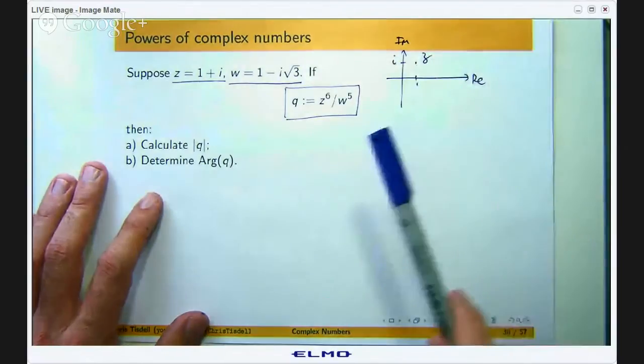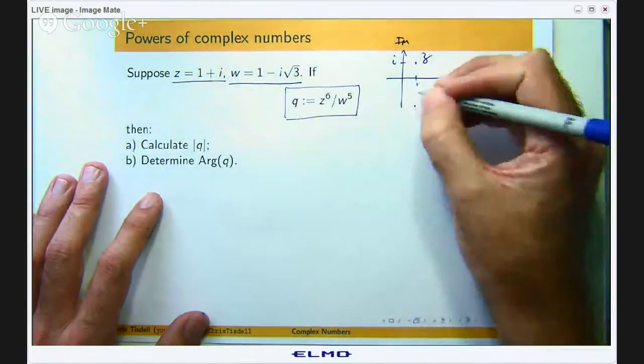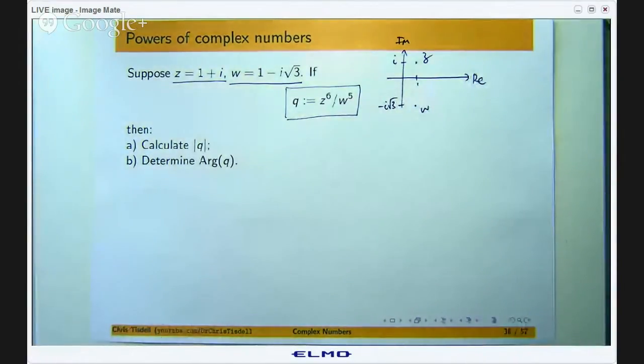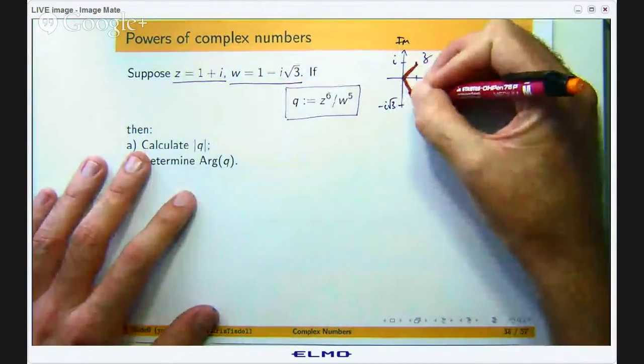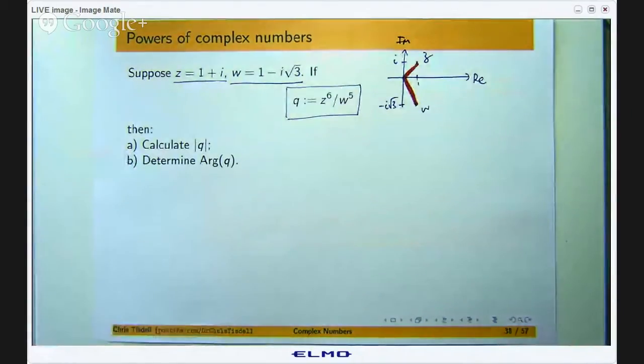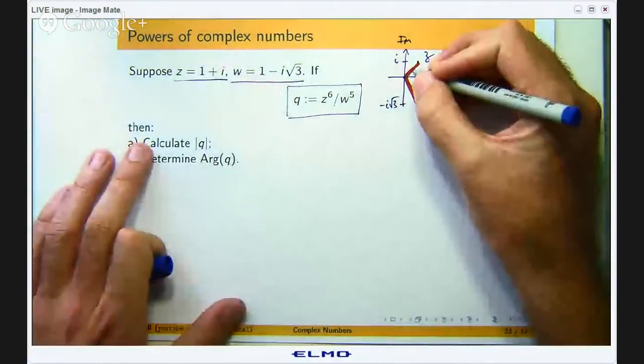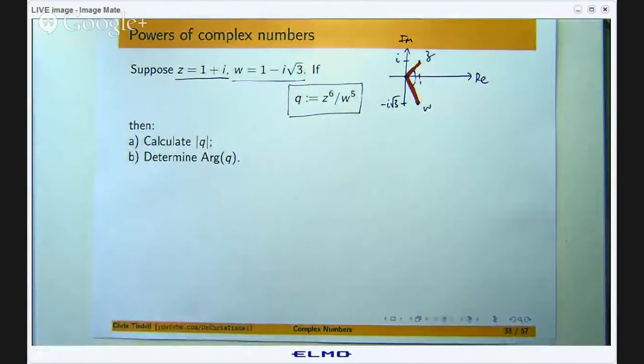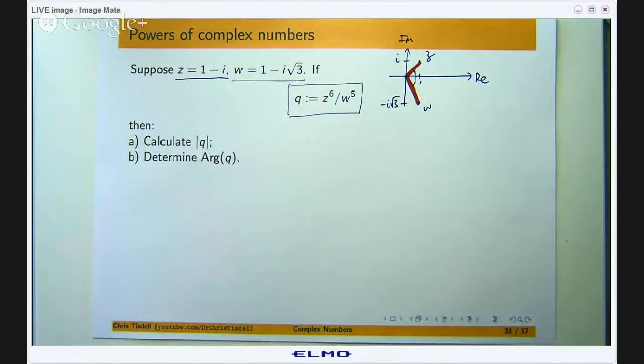That is going to be z. And w, we go one unit this way and root three units this way. That will be your w. If we draw line segments joining those points to the origin, then to put these two complex numbers in polar form we need an angle to the positive real axis and we need length. You can come up with those things visually or by applying various formulae, but I like to do it visually.